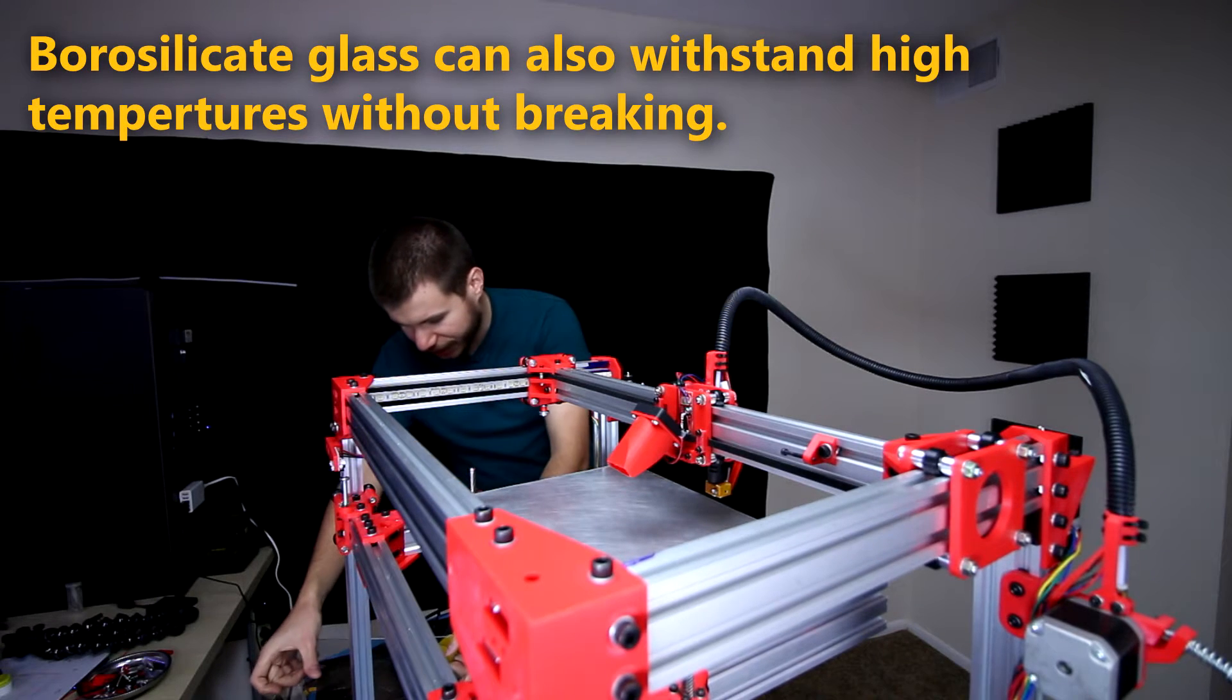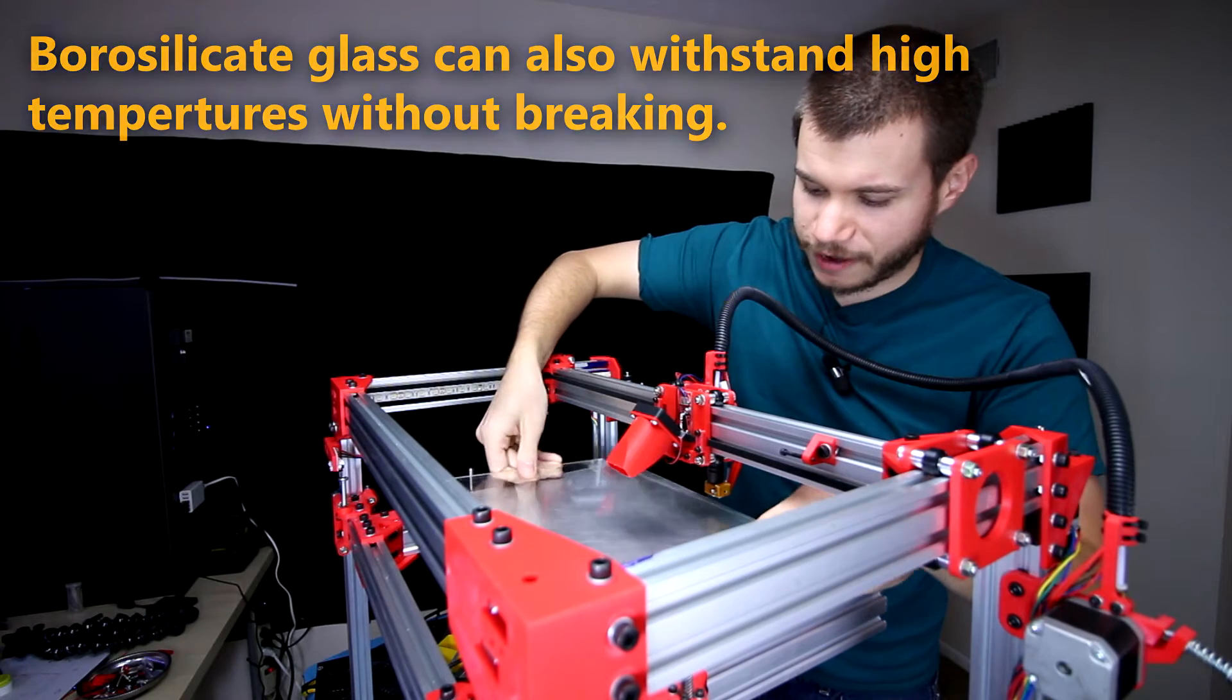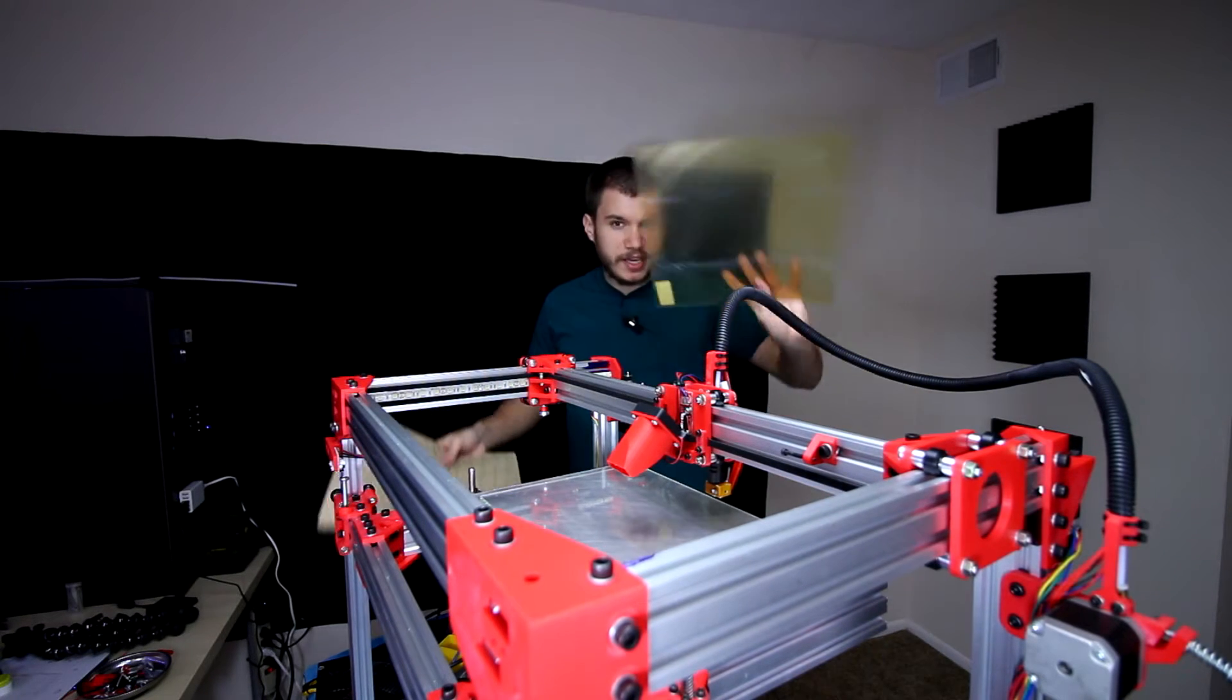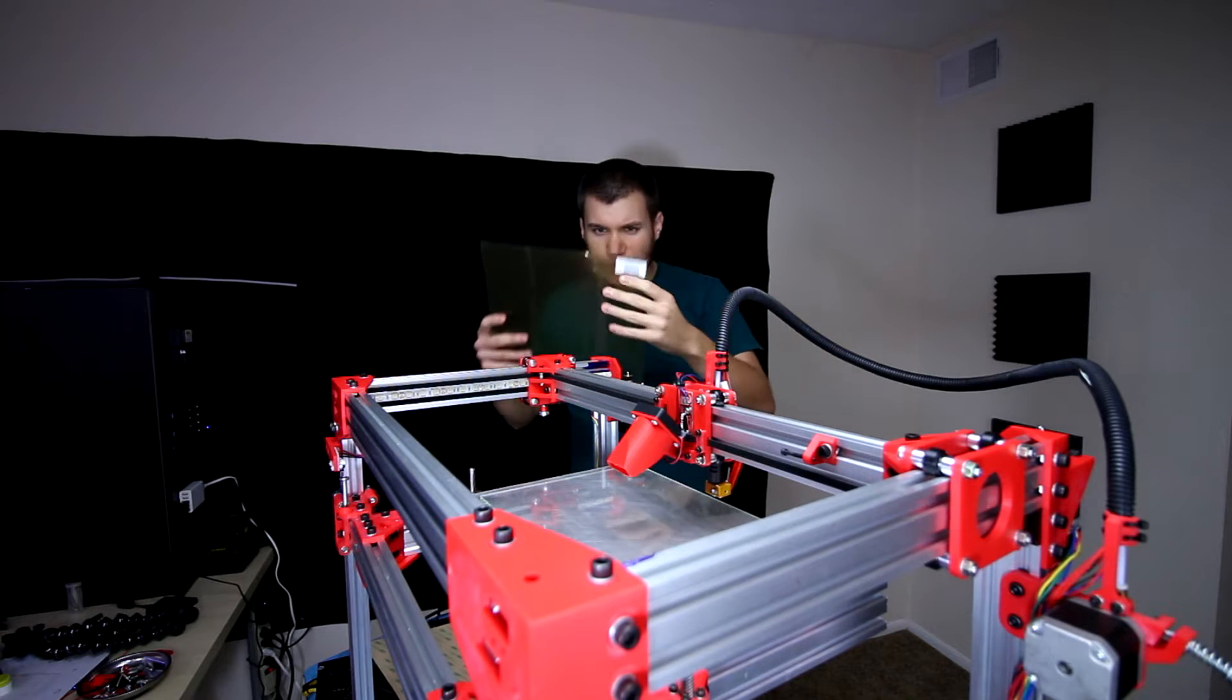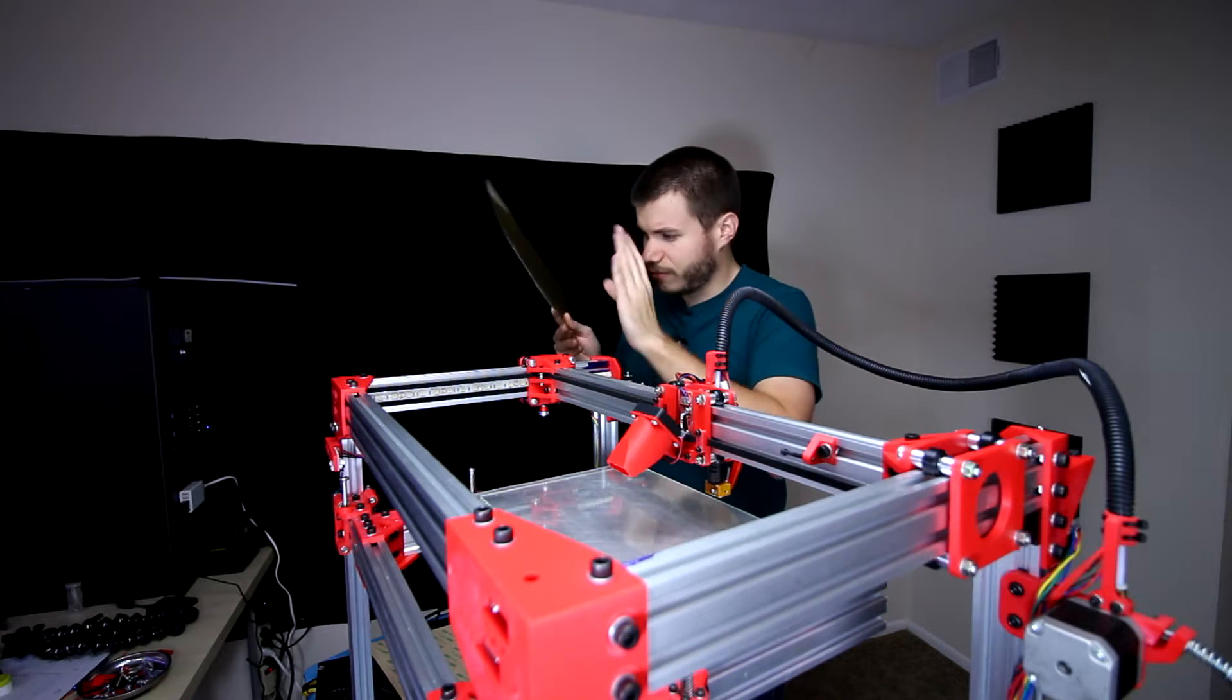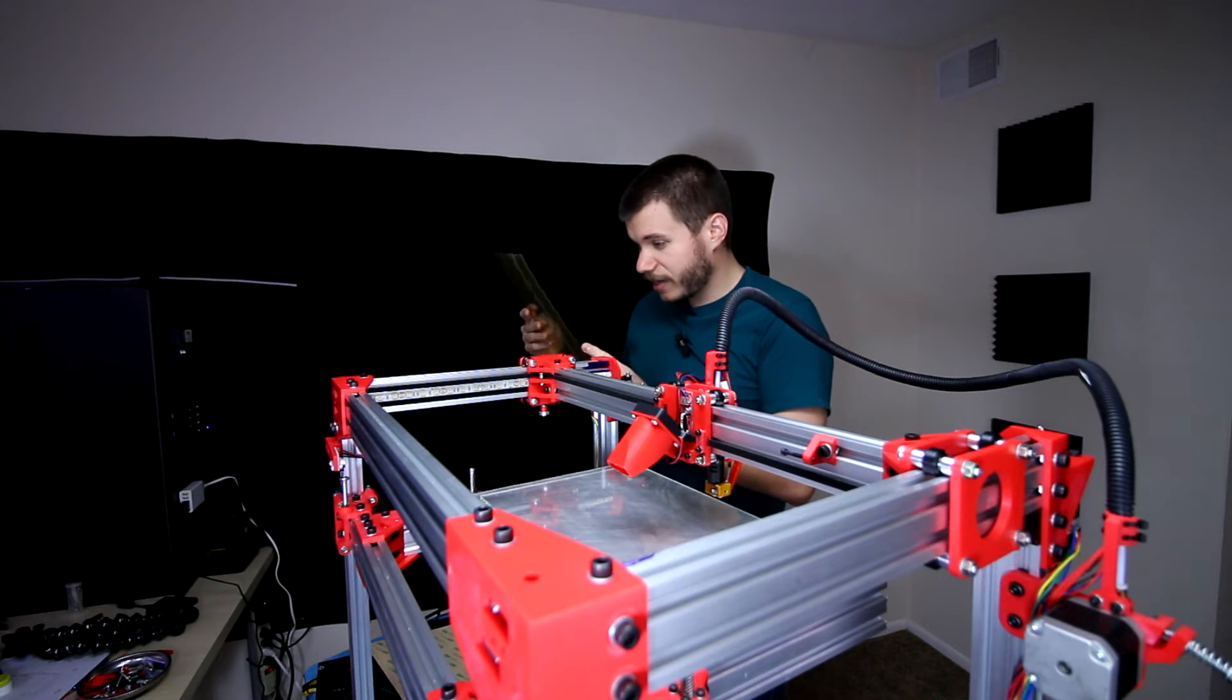For the actual process we're going to need a couple more things besides this piece of glass. We'll need a piece of PEI. This is a certain plastic that is yellow or amber in color.